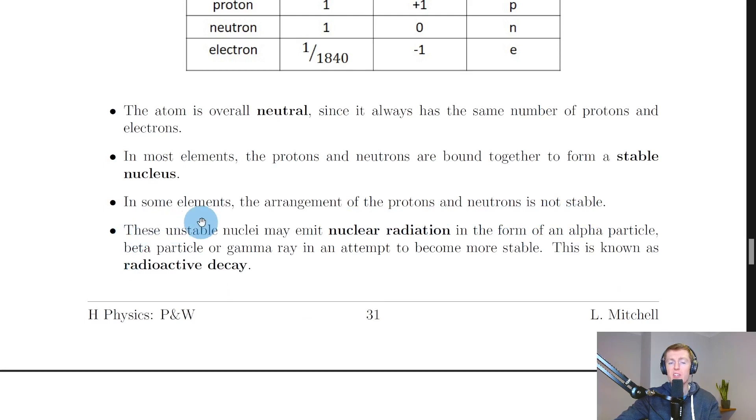In most elements, the protons and neutrons are bound together to form a stable nucleus. In some elements, however, the arrangement of the protons and neutrons is not stable. These unstable nuclei may emit nuclear radiation in the form of an alpha particle, beta particle, or gamma ray in an attempt to become more stable. This is known as radioactive decay.